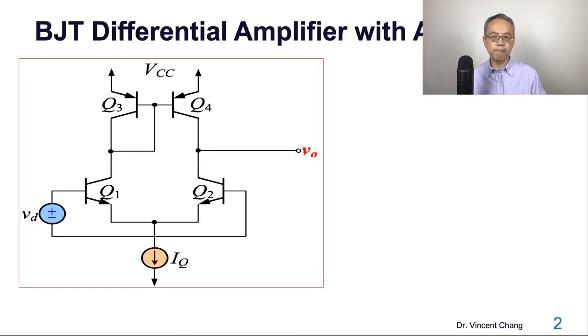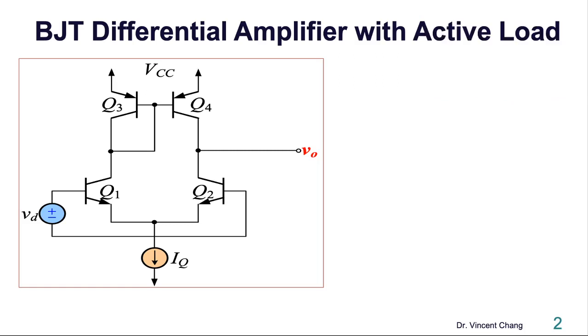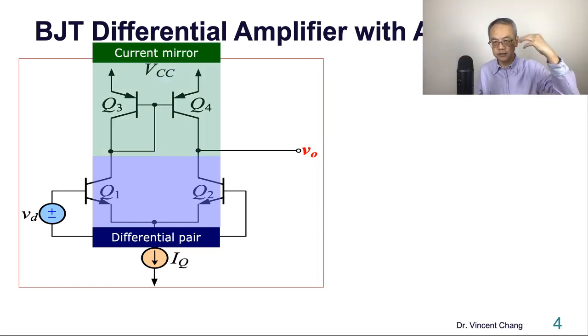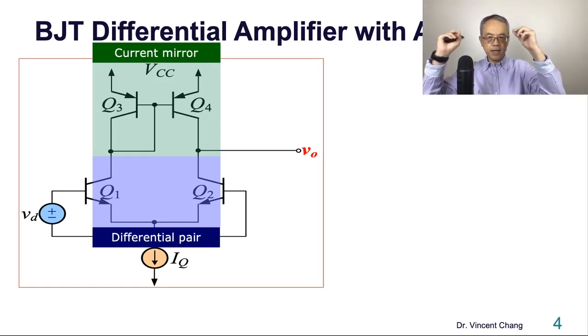Here's the circuit: BJT differential amplifier with active load. On the bottom, it's a differential pair. On the top, it's a current mirror. So NPN transistor Q1 and Q2 serve as differential pair, and PNP transistors on the top function as current mirror.